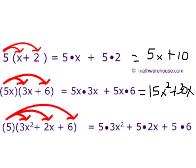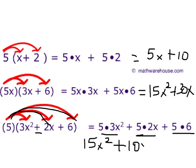And then finally here we have 5 times 3x squared plus 5 times 2x plus 5 times 6. So let's do the math. 5 times 3x squared is 15x squared plus 5 times 2x is 10x plus 5 times 6 is 30.